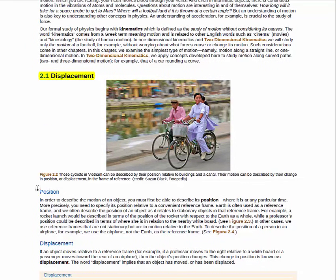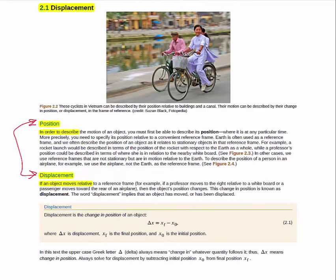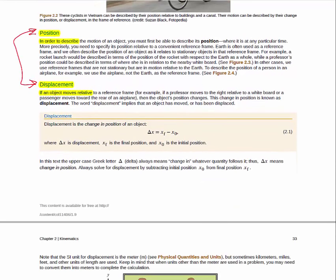Section 2.1 is on position and displacement, and I really think that you should read this section, paying careful attention to the differences in the definitions between these words. One thing I would also like to point out is we will be using the symbol delta quite a lot in this class, and from a physics perspective, delta is always the final minus the initial. So delta x is the final position minus the initial position. Delta v will be the final v minus the initial v. It's always a final minus an initial.